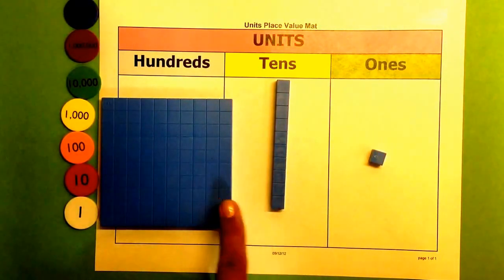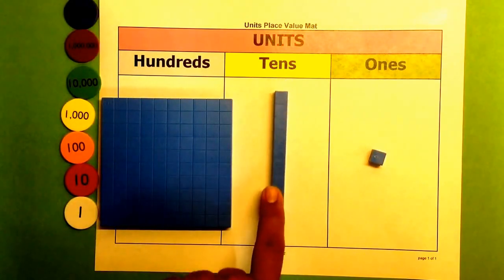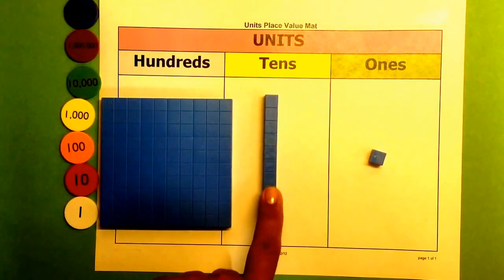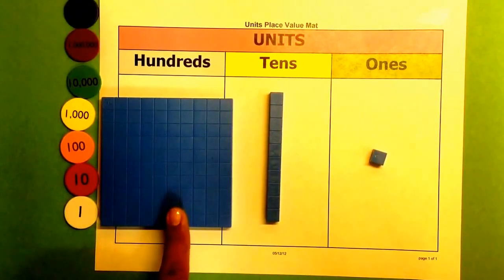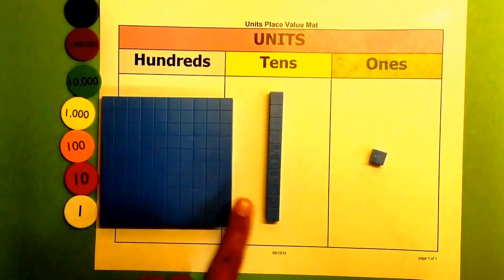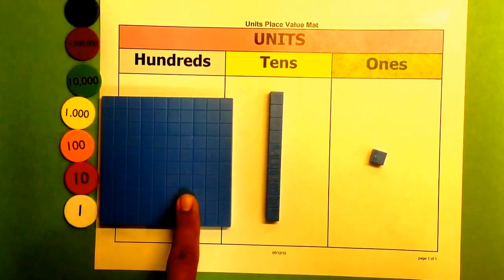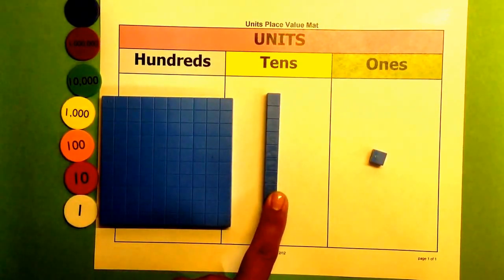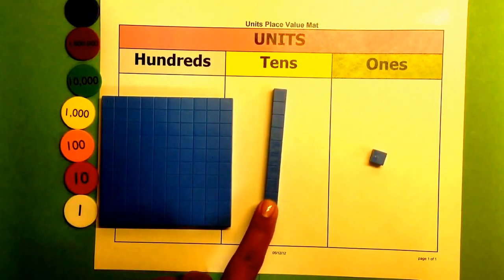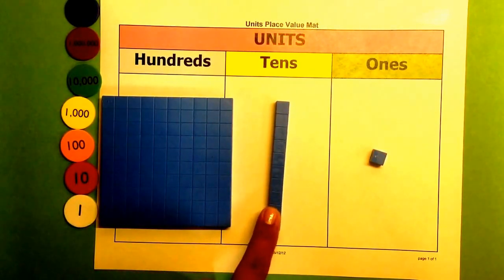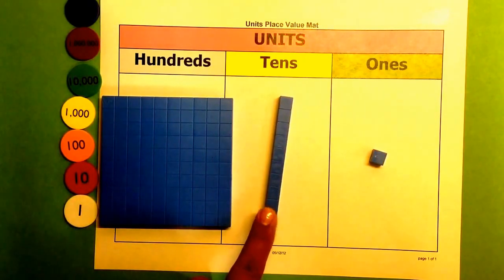The same relationship occurs here. It takes 10 longs to make up one flat. Therefore, the flat is 10 times larger than the 10 long to the right of it. This is why they have a proportional relationship. They're 10 times larger than the unit to the right.